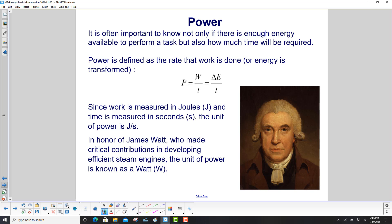It is often important to know not only if there is enough energy available to perform a task, but how much time will be required. Power is defined as the rate that work is done or energy is transformed. So we have work over time or change in energy over time. Since work is measured in joules and time in seconds, the unit of power is joules per second. But, to honor James Watt, who made critical contributions in developing efficient steam engines again in the 1800s, good time for science, the unit of power is known as a Watt or just a W.